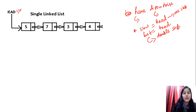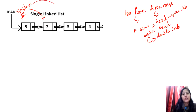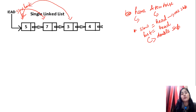Let me explain with a diagram. Currently, slow and fast both point to the head node — say value 5. Next, slow moves one step to 7, but fast moves two steps to node 3. We run a loop checking that fast is not null and fast.next is not null. Since that condition is still true, slow moves one more step to node 3.